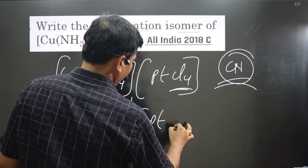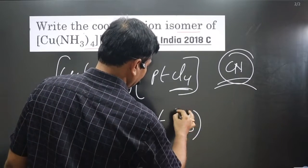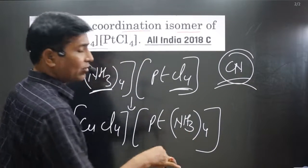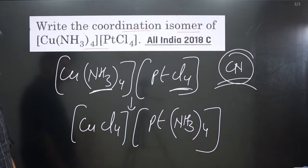Now here we have platinum and in this case we get ammonia whole 4 is there. In this case also coordination number 4 is there.